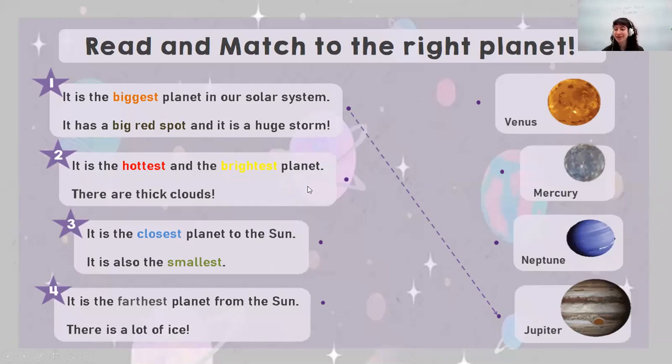And then the next one, number two. It is the hottest and brightest planet. There are thick clouds. Do you think that it's Neptune, Mercury, or Venus? It's Venus. Very good. And number three, it is the closest planet to the sun. It is also the smallest. Do you remember what that was? Closest and the smallest? It's Mercury. And then our last one, it is the farthest planet from the sun. There is a lot of ice there. What do you think? This is Neptune. Very good.